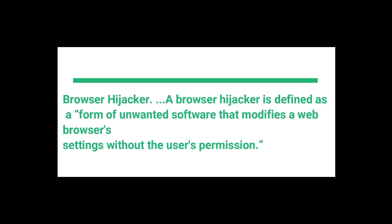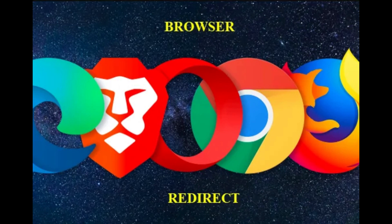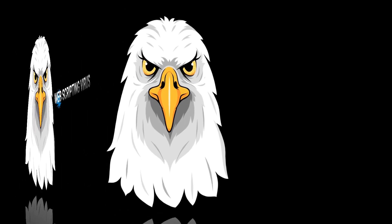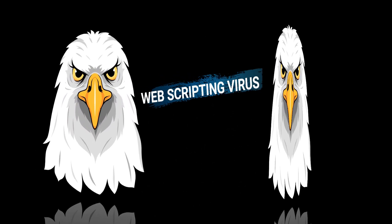The third type is the browser hijacker. A browser hijacker is defined as a form of unwanted software that modifies web browser settings without the user's permission. Here we can see that our default browser is getting redirected to any other unknown browser, which is quite dangerous.